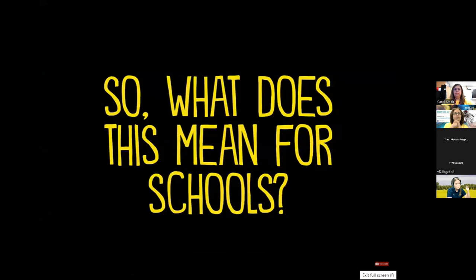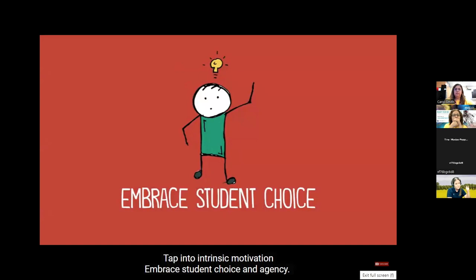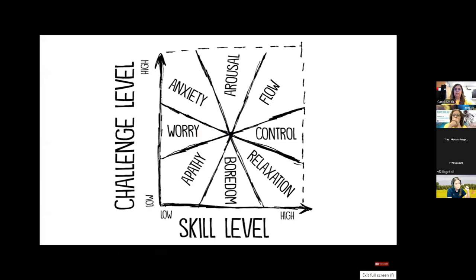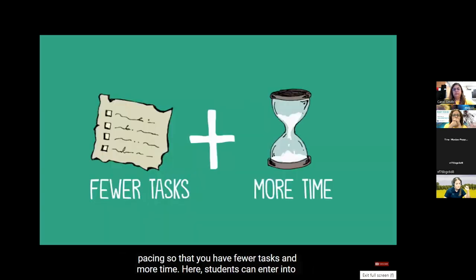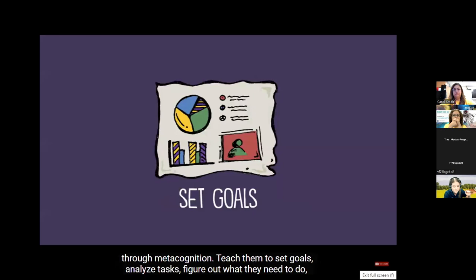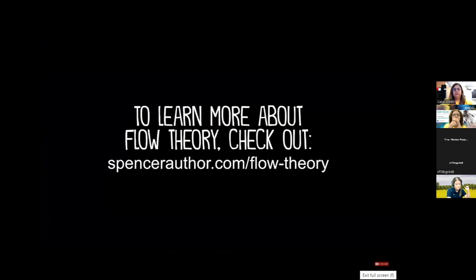[Video] So what does this actually mean for schools? Number one: tap into intrinsic motivation — find tasks students will want to do rather than tasks they simply have to do. Number two: embrace student choice and agency — whenever possible, allow them to own their learning. Number three: provide the right scaffolding so students can match the challenge level to their ability levels. Number four: minimize distractions so students can focus — change the pacing so there are fewer tasks and more time to accomplish them. Number five: help students learn to monitor their own progress through metacognition — teach them to set goals, analyze tasks, figure out what they need to do, make adjustments in the moment, and reflect on their progress.